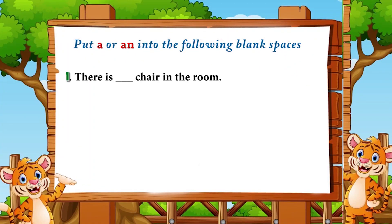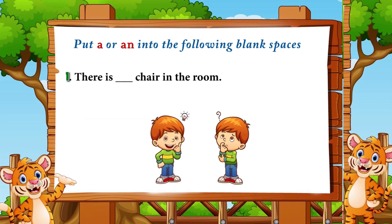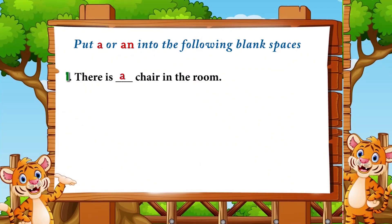Number one: 'There is ___ chair in the room.' The answer is 'a' — 'there is a chair in the room' — because 'chair' begins with a consonant sound.